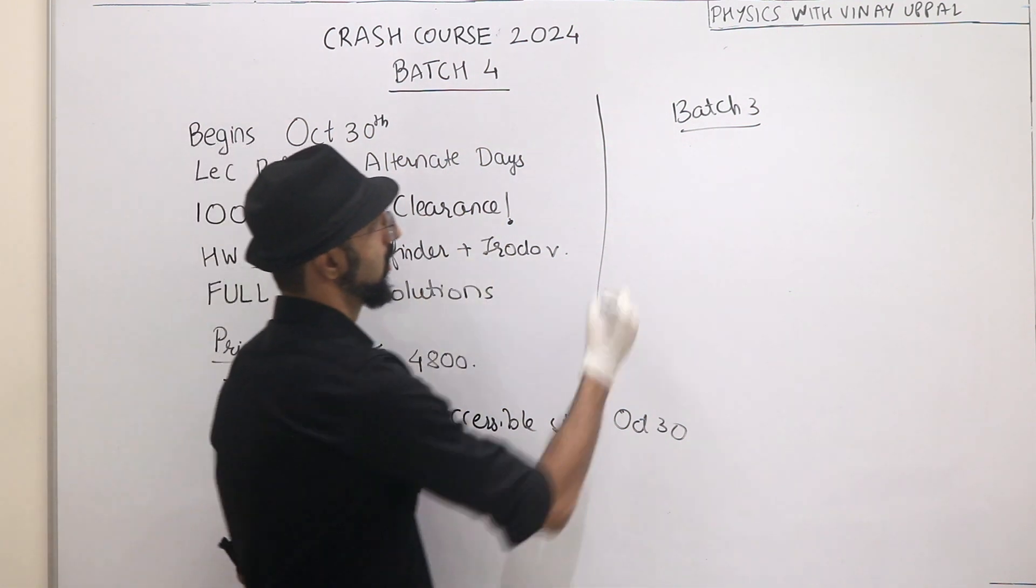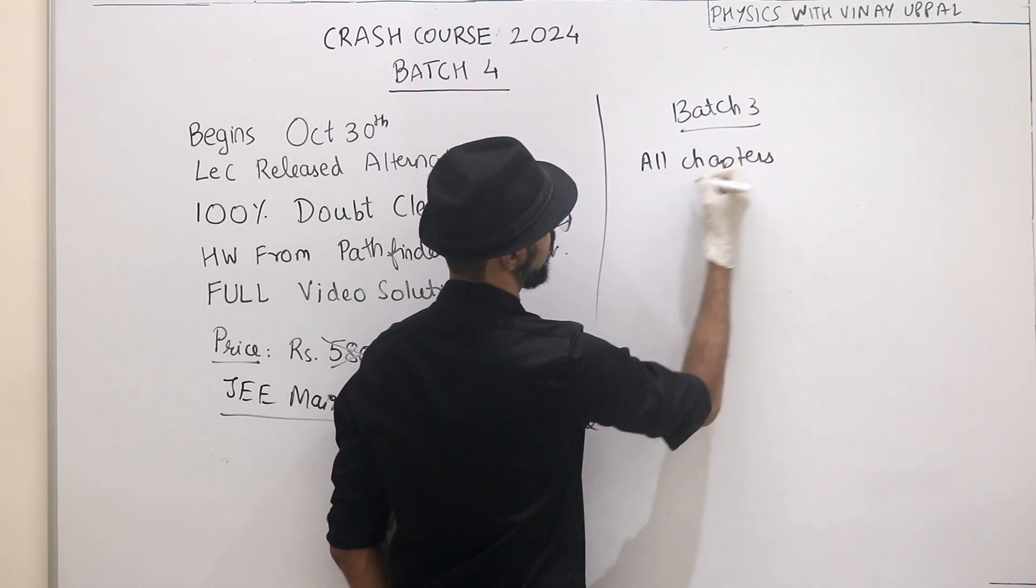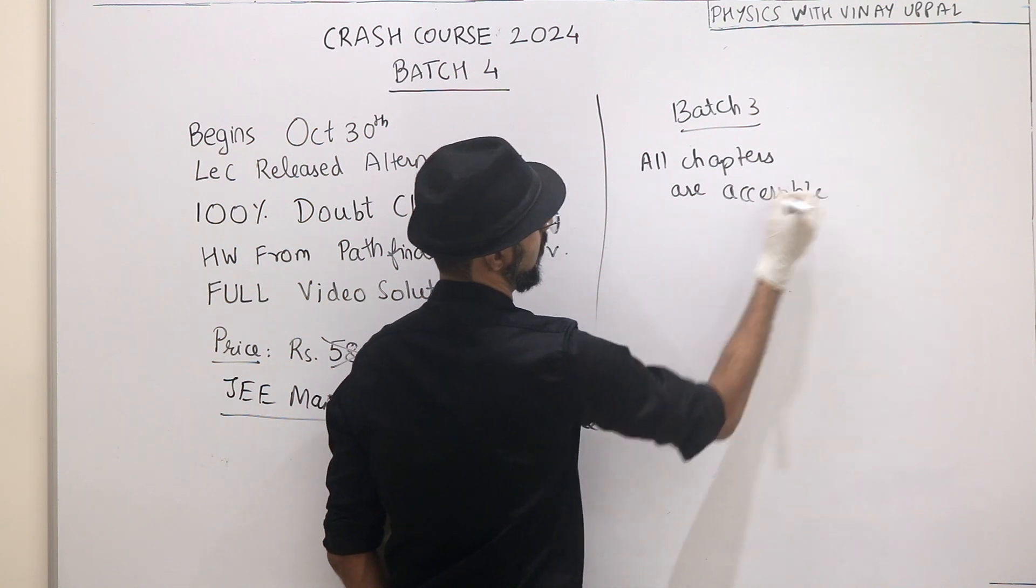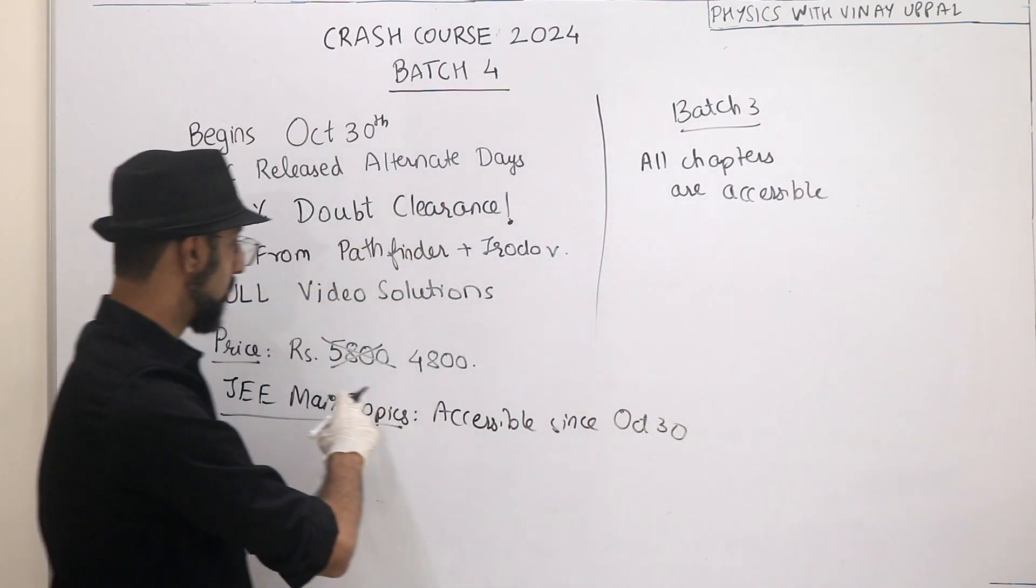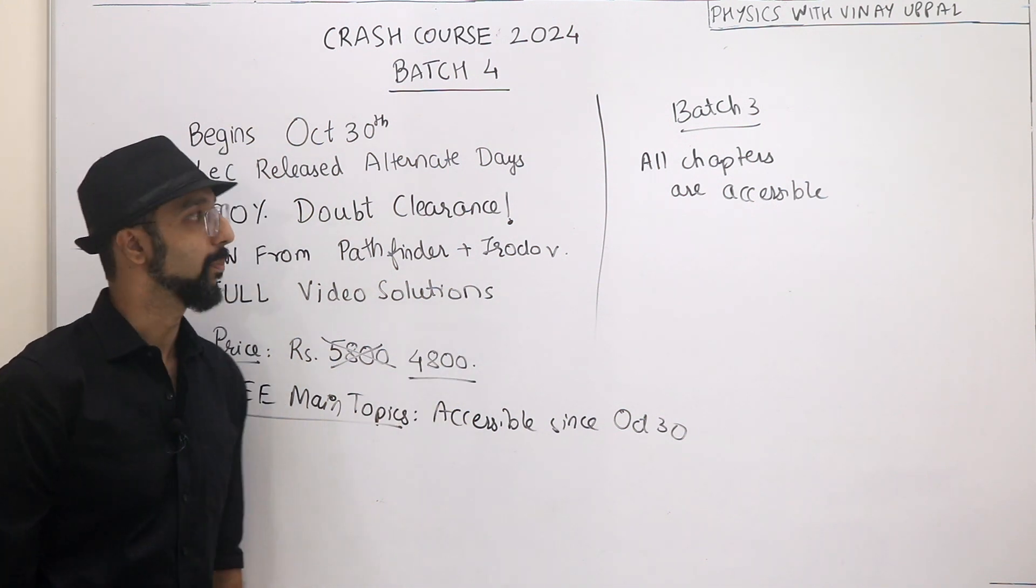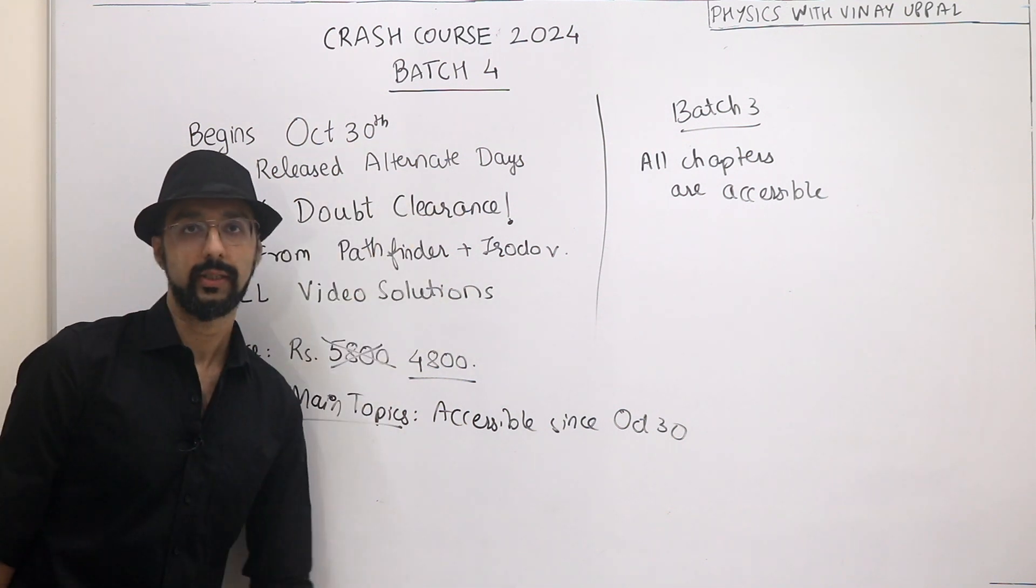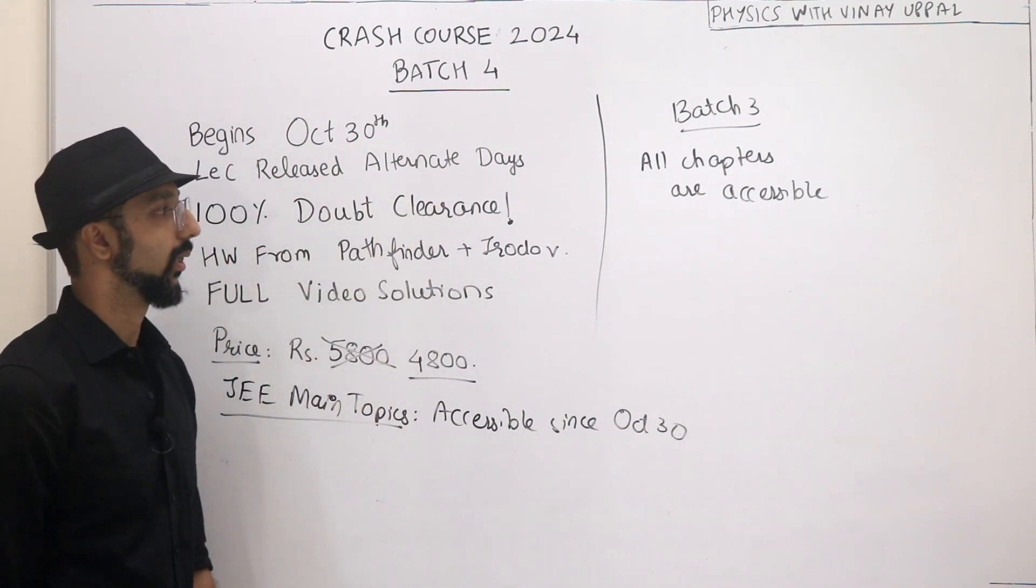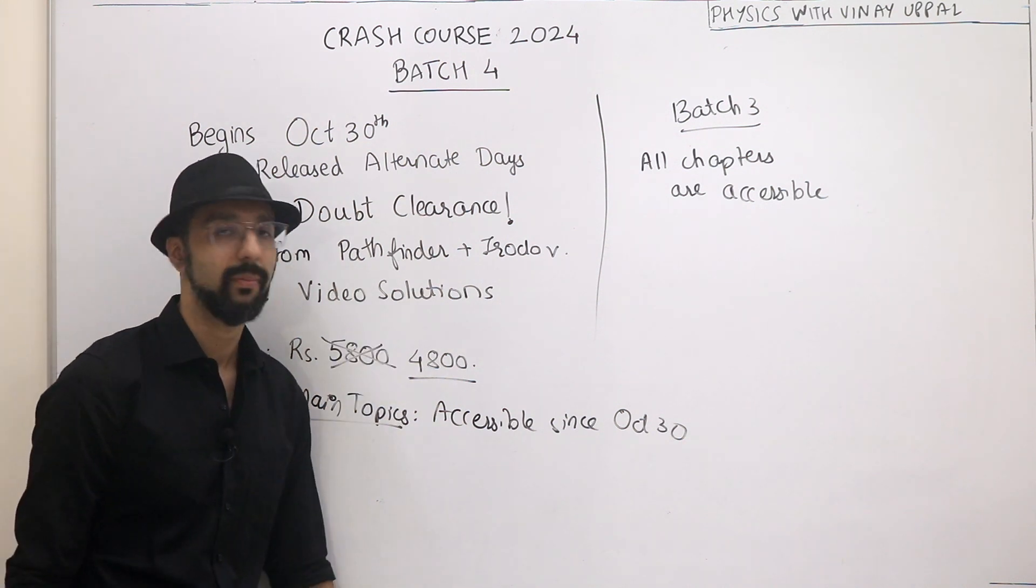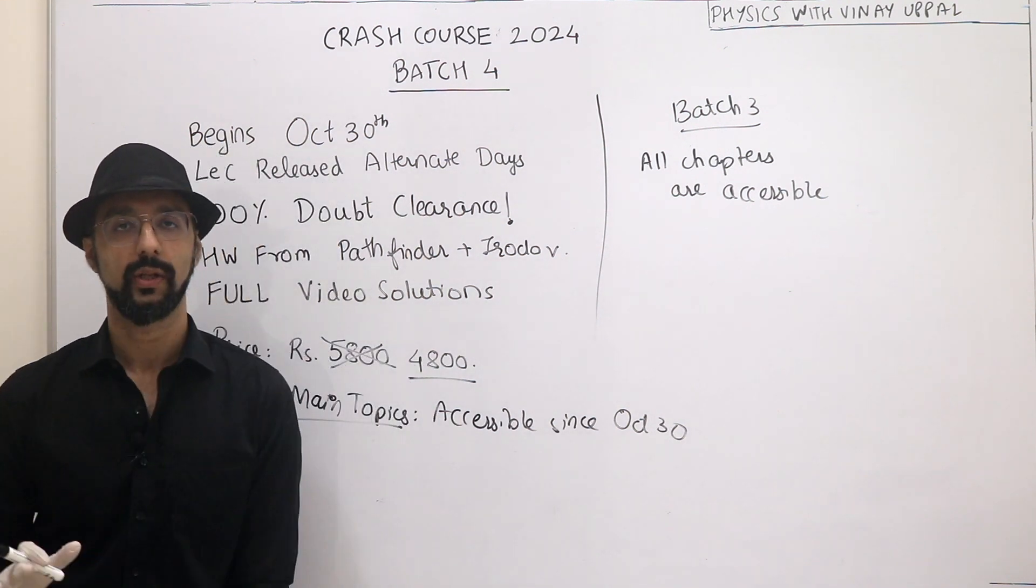In Batch 3 all chapters are accessible and that is at a higher cost than Batch 4. Batch 4 is at a lower cost, currently for a limited time, mainly because the lectures are released on alternate days. Whichever is comfortable for you, you can follow this schedule of Batch 4 every alternate day, and till December 21st, around 2 months we'll finish the course.